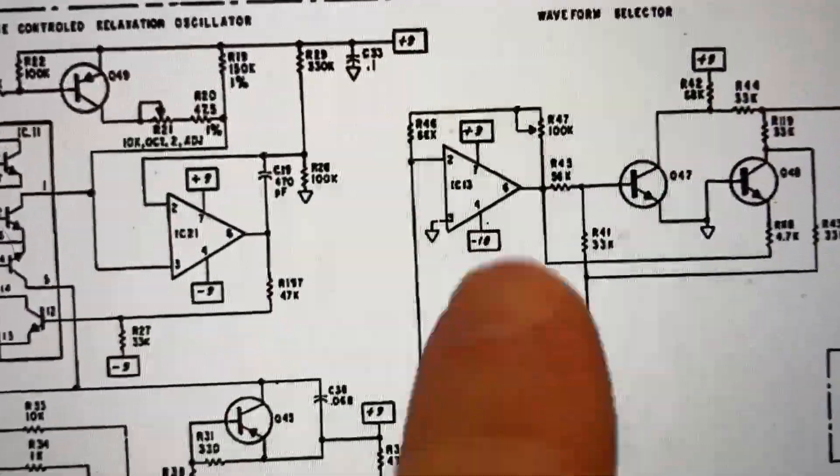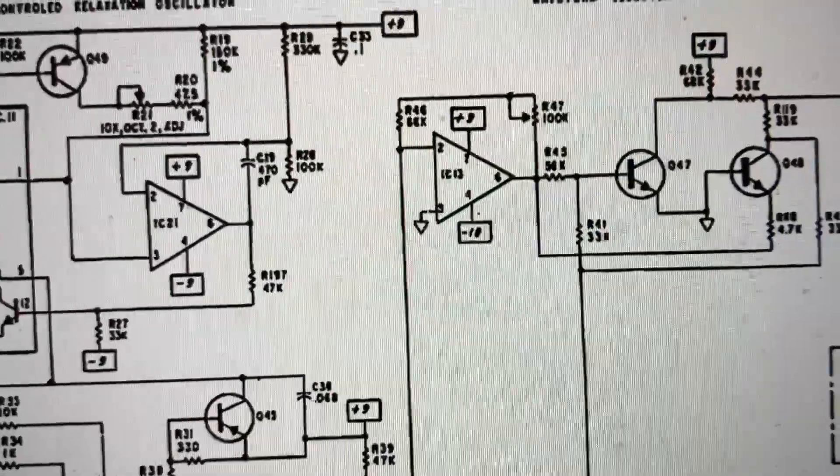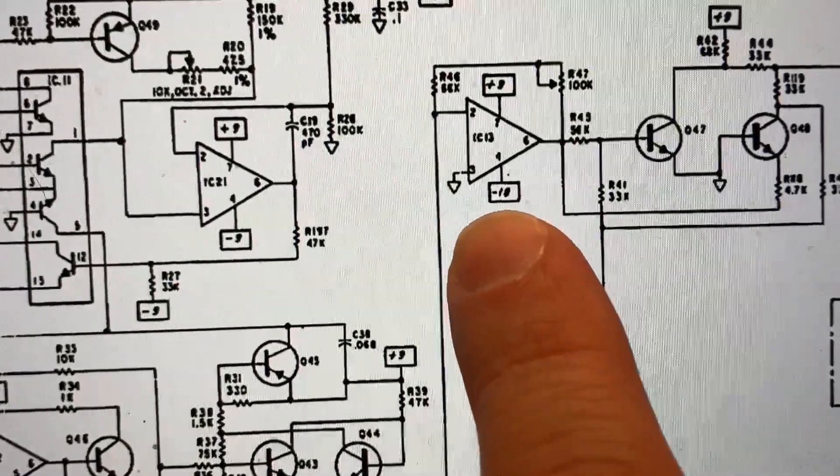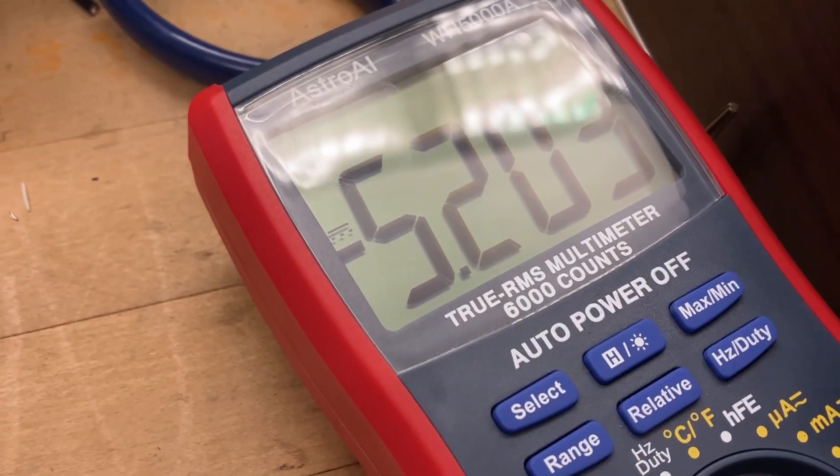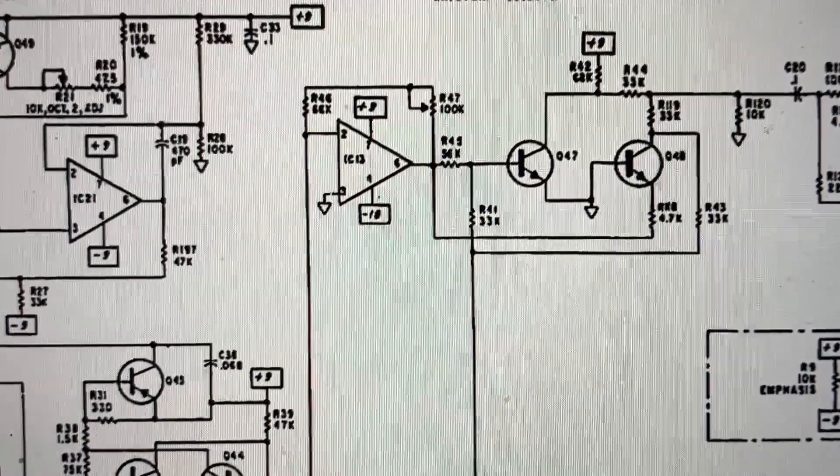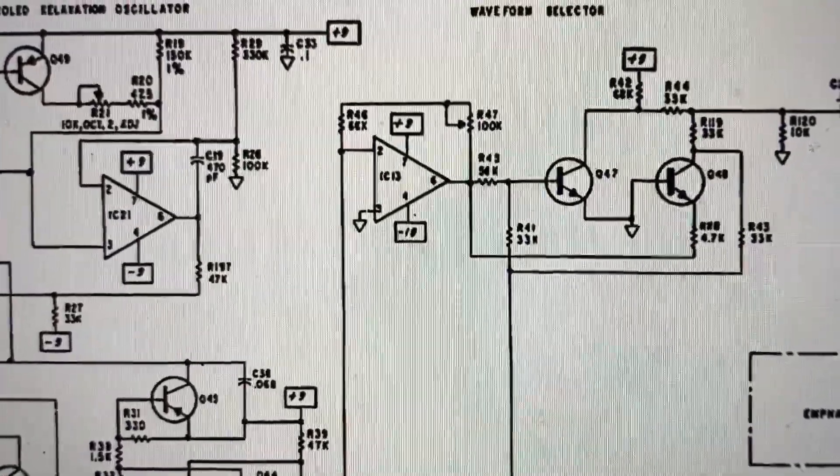Okay, on IC13, measure pin 7 to ground. 4, 5, 6, 7 to ground. Okay, so that's measuring 9. And now on IC13, measure pin 4 to ground. Okay, so we're reading something like minus 5 volts. And I think that should be a minus 18 volts. I think our negative supply is messed up.